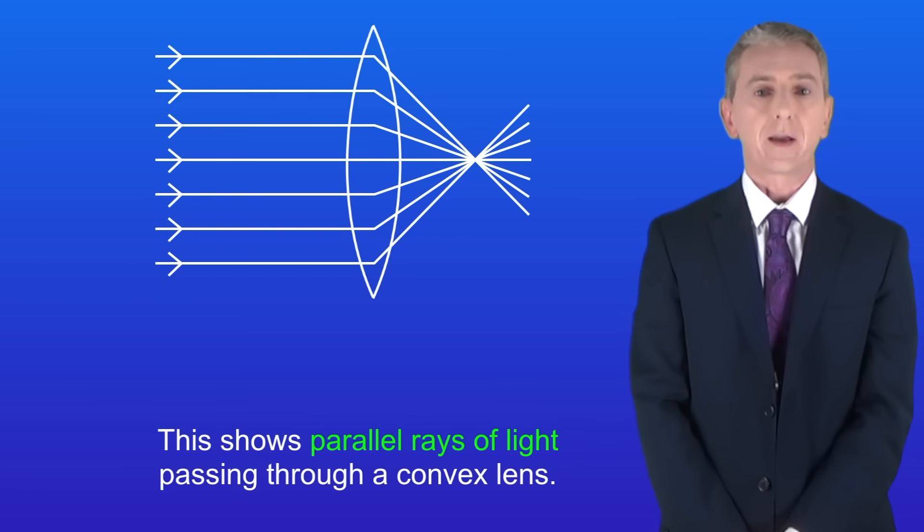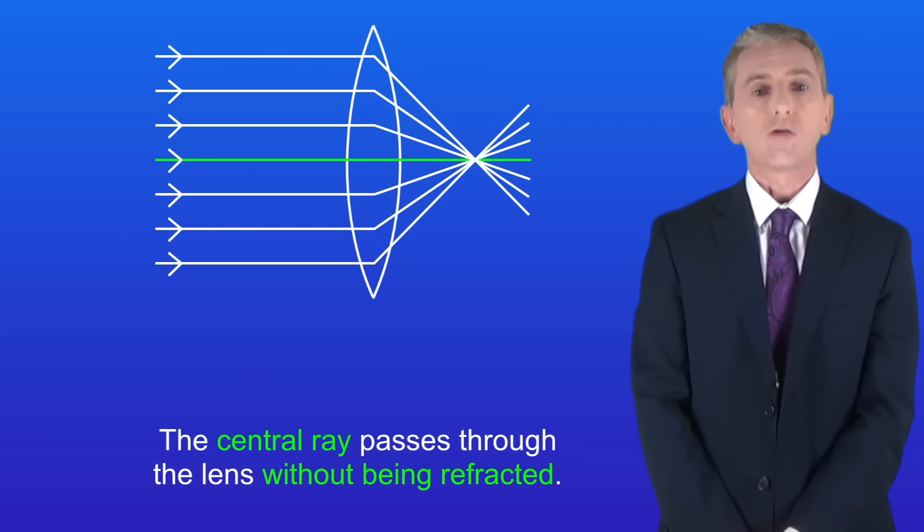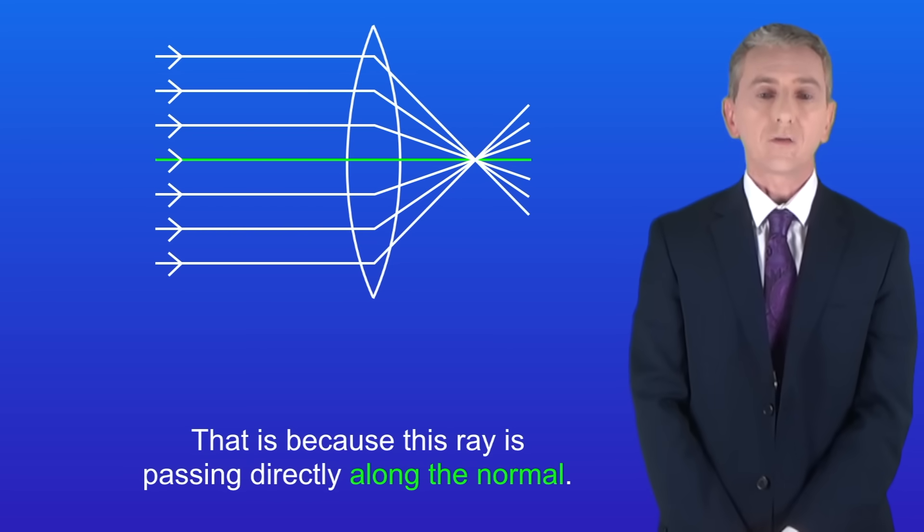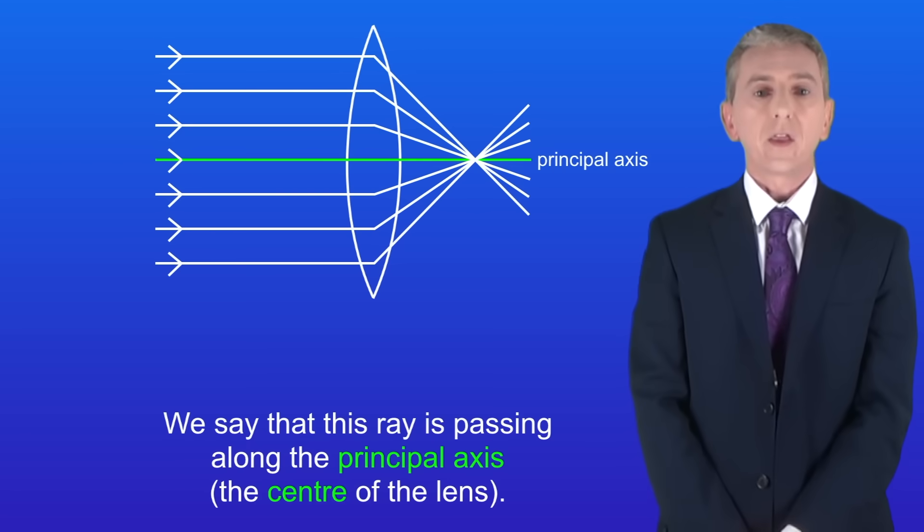I'm showing you here parallel rays of light passing through a convex lens. There are two important points about this. Firstly the central ray passes through the lens without being refracted. That's because this ray is passing directly along the normal. We say that this ray is passing along the principal axis, in other words the center of the lens.